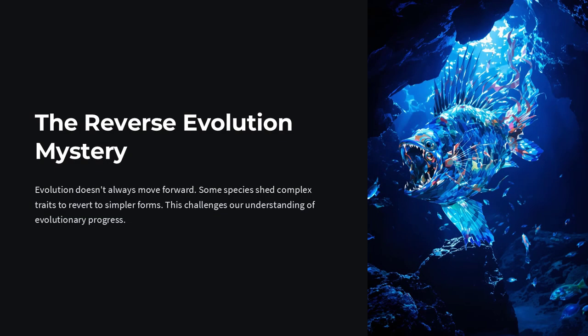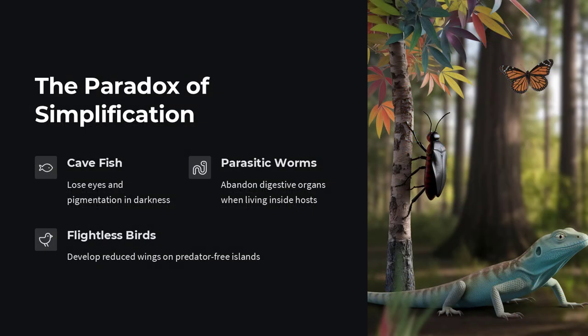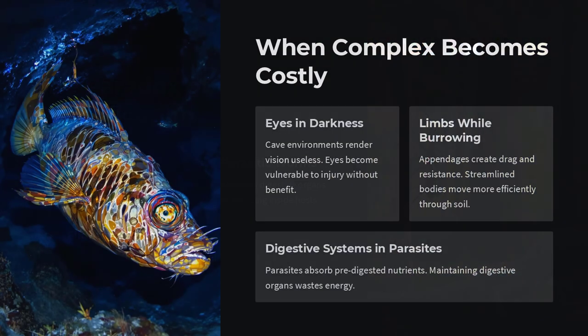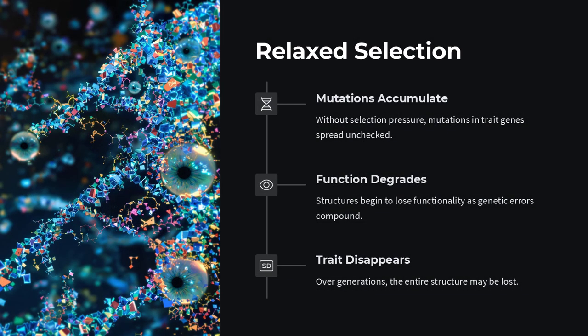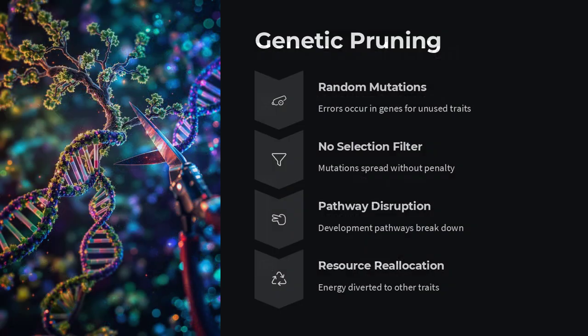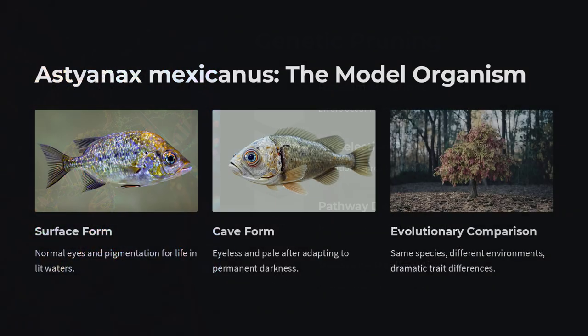How can certain species appear to shed complex traits and revert to more primitive forms, seemingly running evolution's arrow backward? In numerous lineages, from cave-dwelling fish that lose their eyesight to parasitic worms that abandon digestive organs, organisms exhibit trait losses that echo distant ancestors. This reverse evolution challenges the notion that evolution reliably drives increasing complexity and specialization.